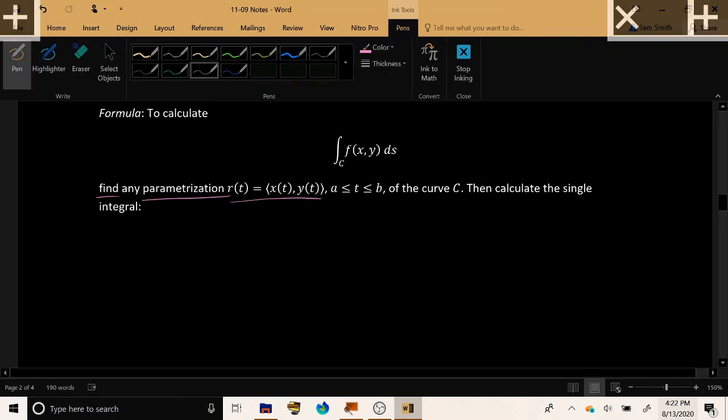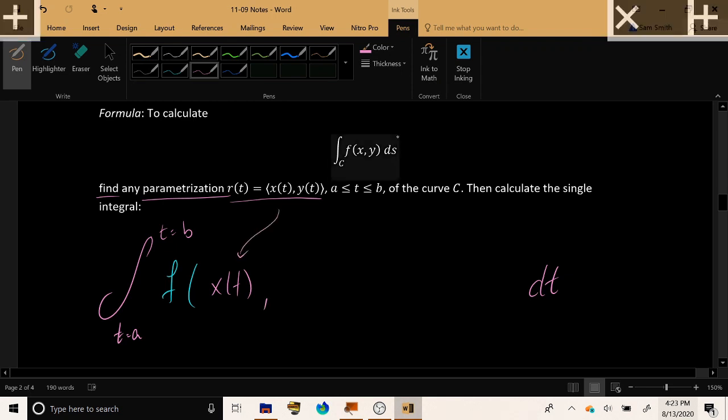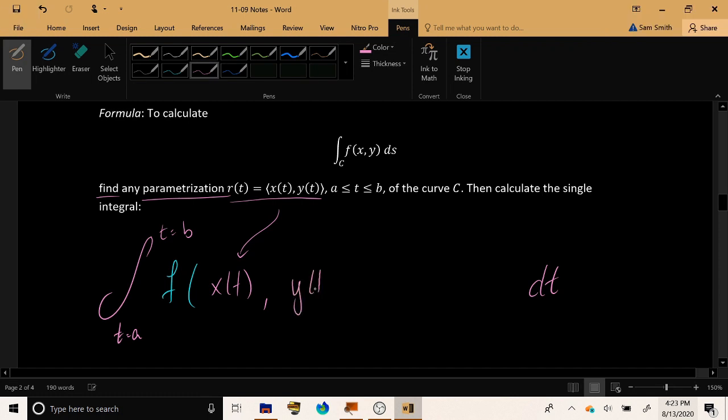Once you have found a parametrization of your curve c, integrate as t goes from a to b with respect to t, the following integrand. You take your function f, but instead of just having the variable x there, you have the variable x of t from your parametrization, and replace the y in your function with the y of t from your parametrization, and finally, multiply that by an extra factor.